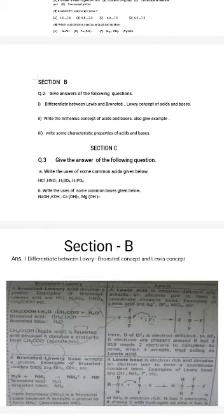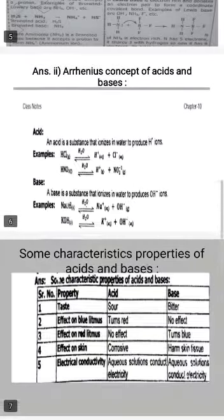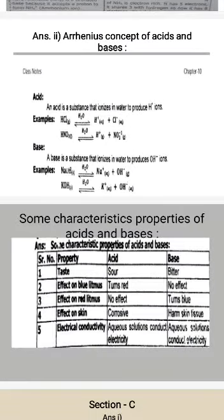The next question we have: derive the Arrhenius concept of acids and bases, also give example. According to Arrhenius, acid is a substance or species that ionizes in water to produce H positive ion.